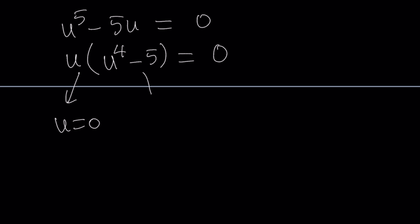And the second one gives us u to the fourth equals 5. And as you should know, this has two solutions. One of them is the fourth root of 5. And the other one is the opposite of this number. Why?